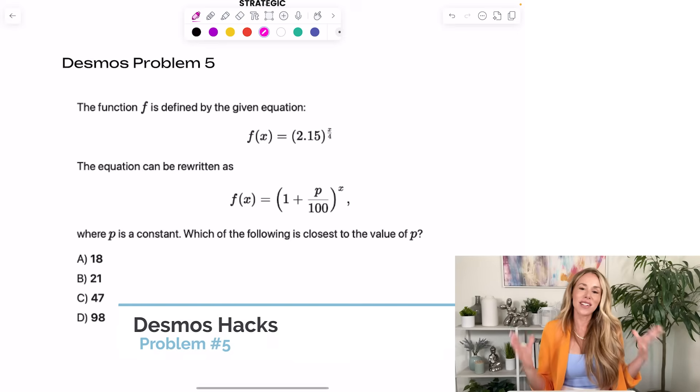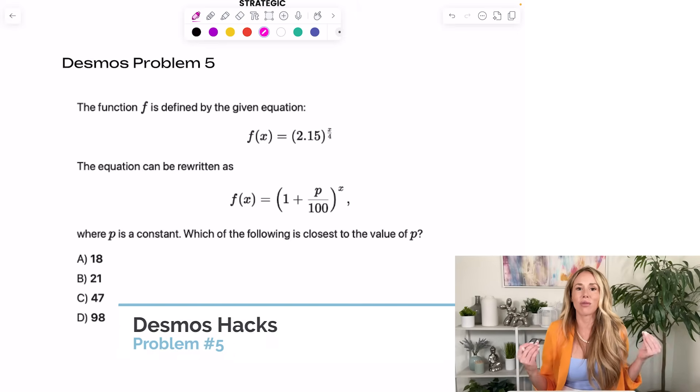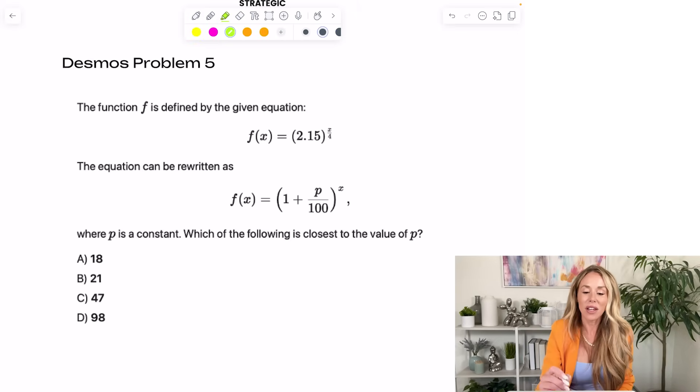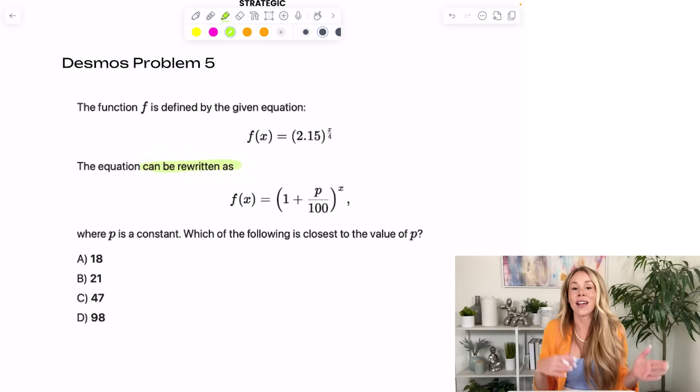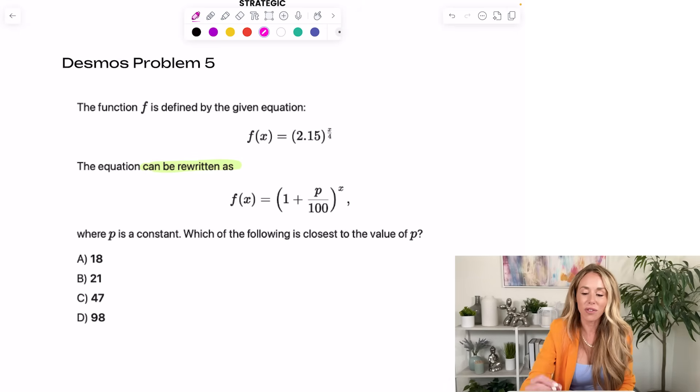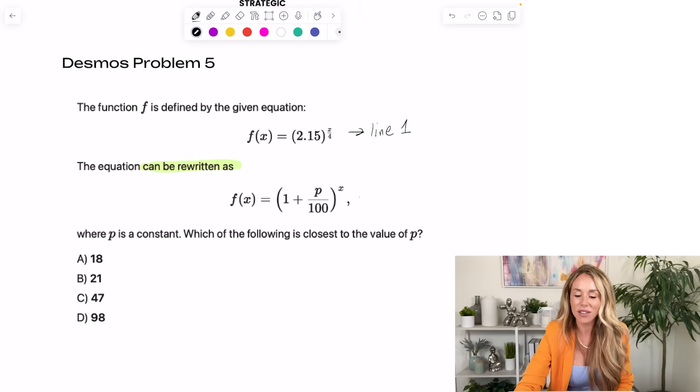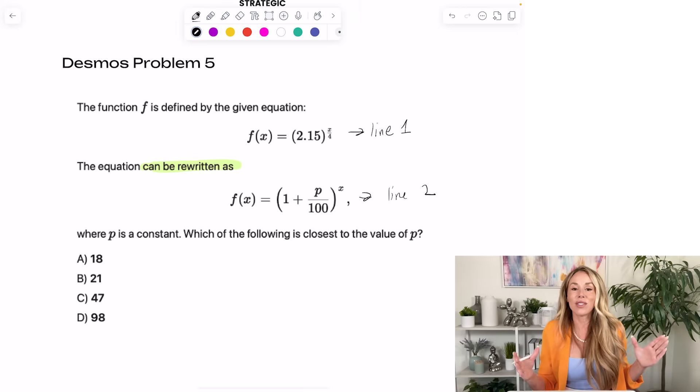Alright, my fifth Desmos hack for you is to recognize when they give you two equations, and they use language like can be rewritten as or is equivalent to. Because in these cases, what you can do is you can put the first equation on line 1, you can put the second equation on line 2 in Desmos, and what you want to do is you want to get the graphs to perfectly overlap. That's when they're equivalent.